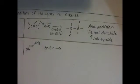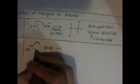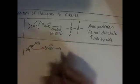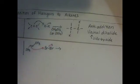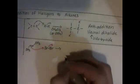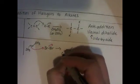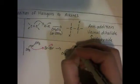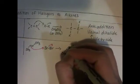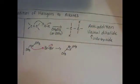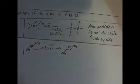The mechanism is the pi cloud attacking one of the bromines and breaking the bromine-bromine bond initially. And what we end up getting for this is this bromonium intermediate thing.